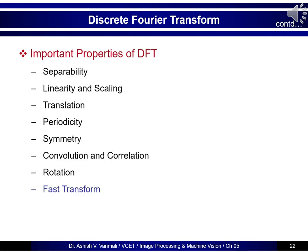DFT has a separable property, meaning 2D DFT can be computed by first taking DFT along the rows and then along the columns, or vice versa. DFT also follows the linearity property, scaling property, translation property, periodicity property, symmetry property, convolution and correlation property, rotation property, and we can also compute DFT efficiently using a fast transform.